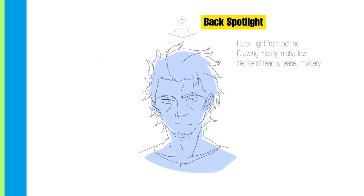A less common way to light a scene is with a strong light source from the back, such as with a spotlight. The front of the character is almost all in shadow except the edges. You often see this in scenes depicting intense unease and fear, as this gives the scene a really unnerving or melancholic feel.